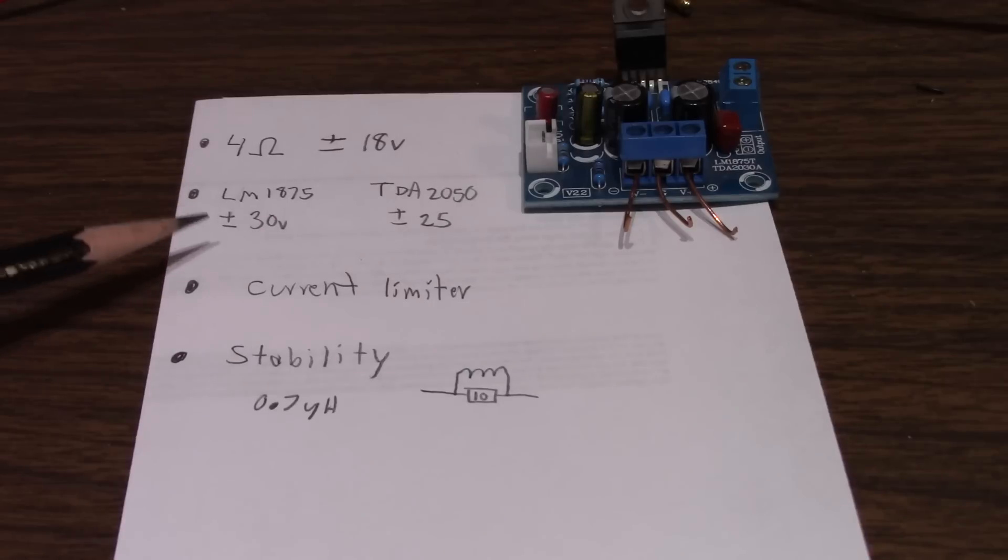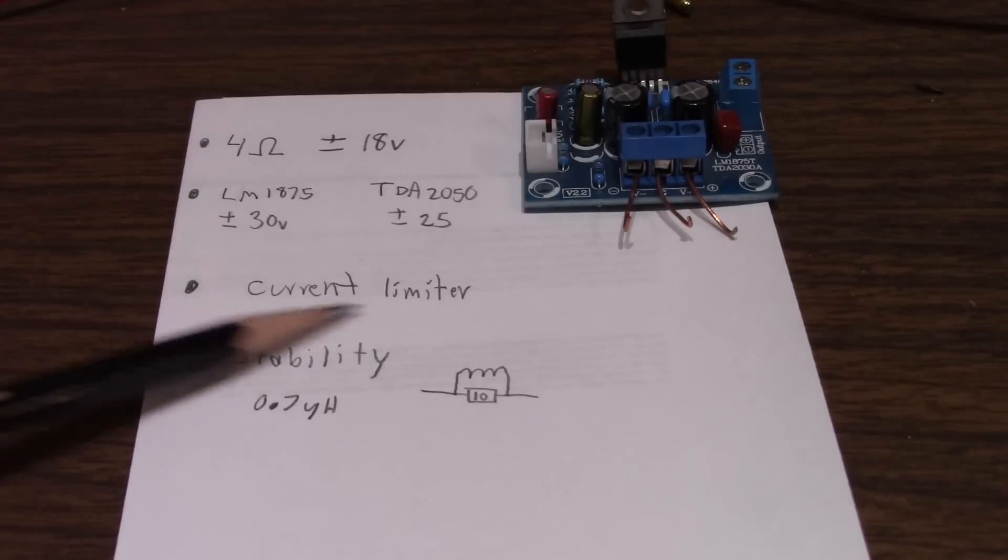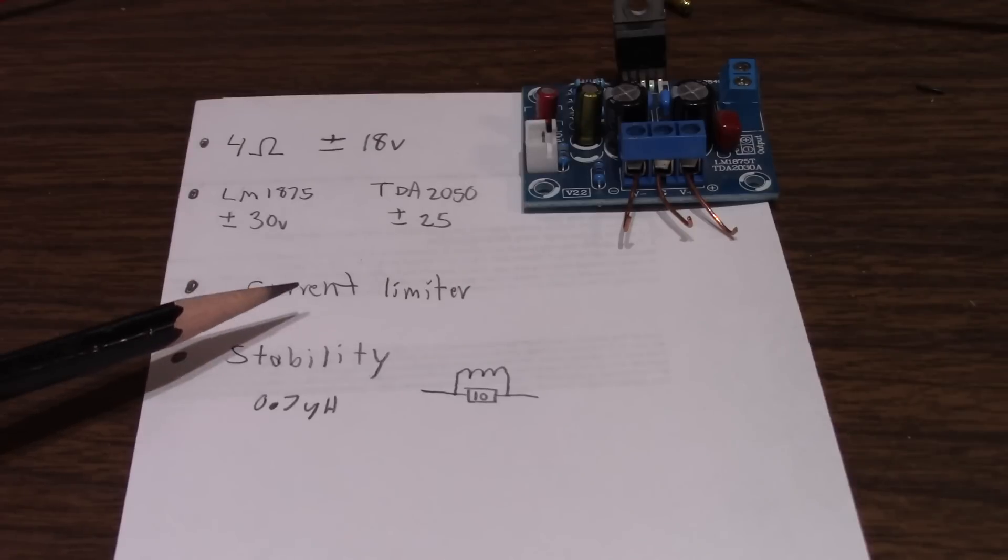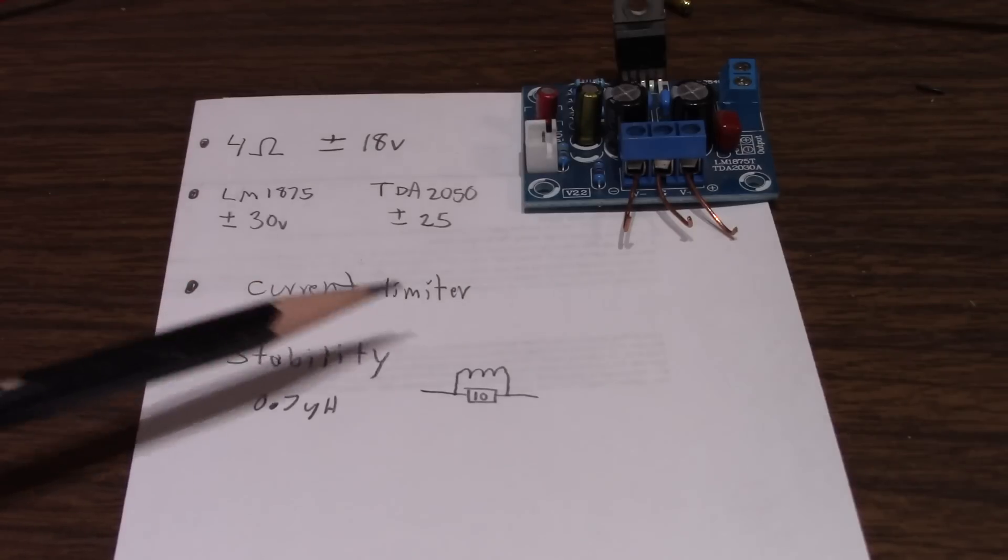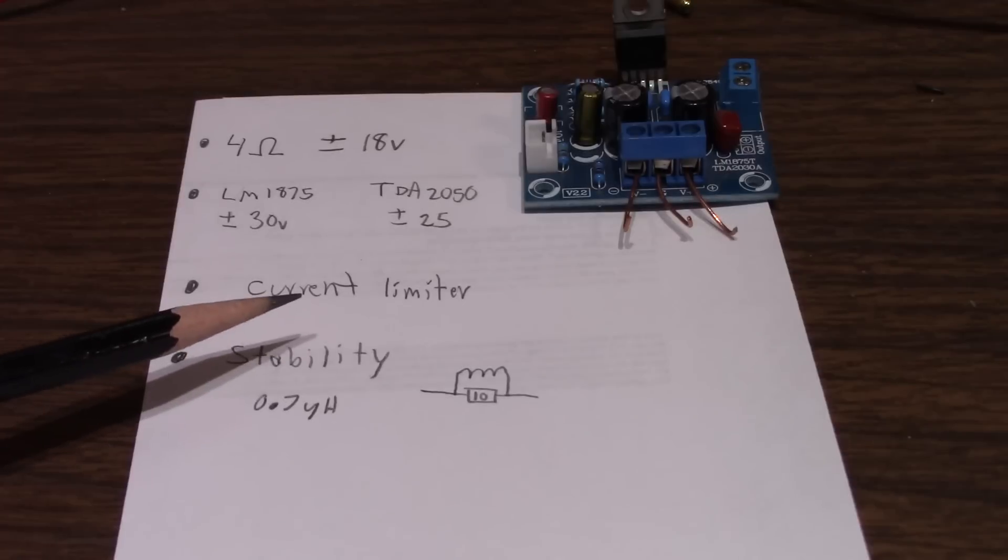So you can run the LM1875 at plus minus 25 volts with an 8 ohm load and not bump into its current limiter and get around 30 watts or so. I didn't actually measure it, maybe I did in the other video. I think the current limiter circuit is better in the LM1875.